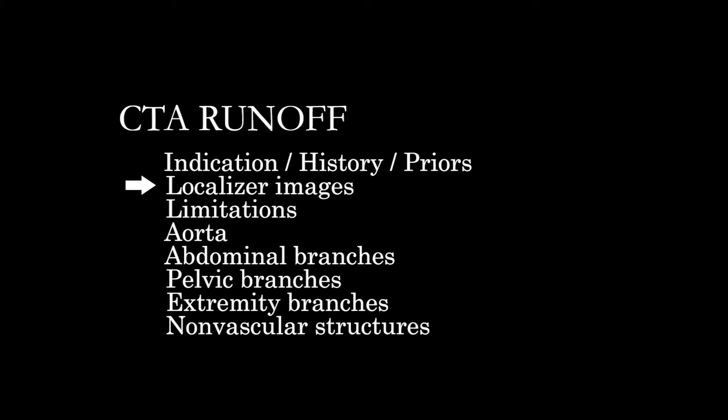Then we'll look at localizer images, get the sense of any limitations — particularly regarding contrast bolus timing, streak artifact, motion, if any. And then we'll go through the arterial anatomy, looking at the aorta, its major abdominal and pelvic branches, into one side, the hemipelvis, down into the lower extremity as far as we can see it.